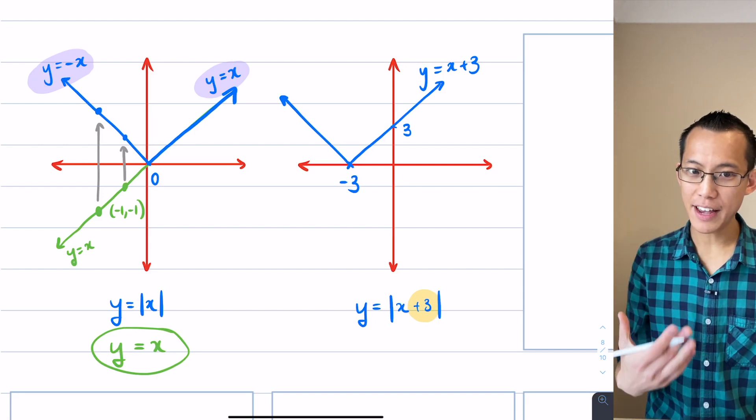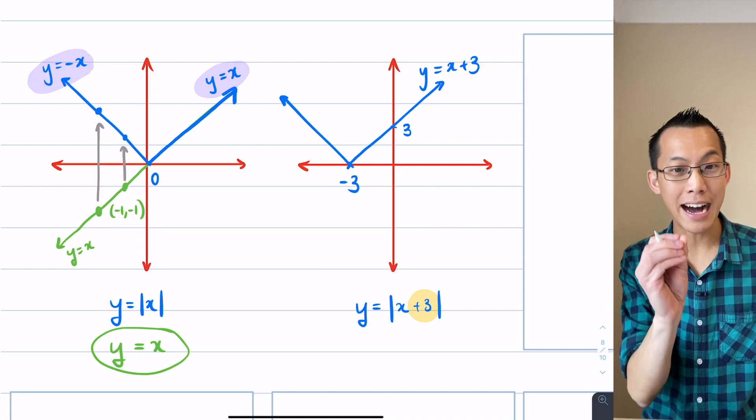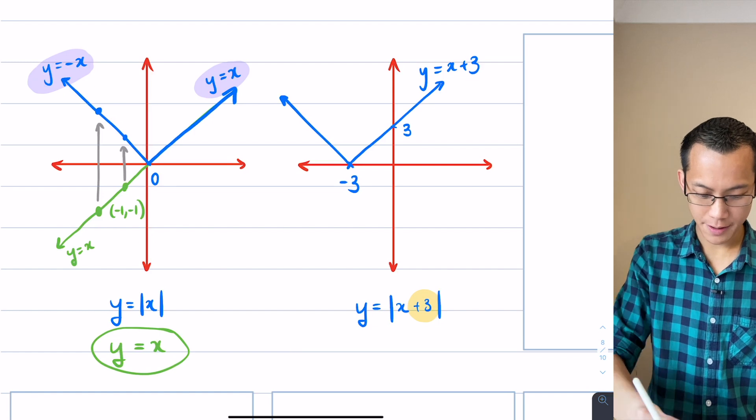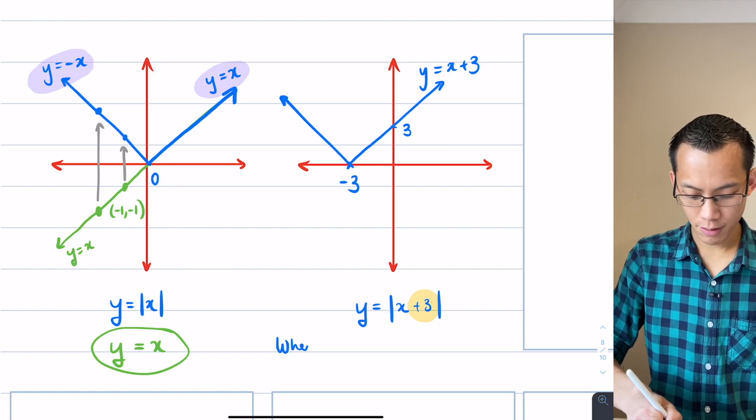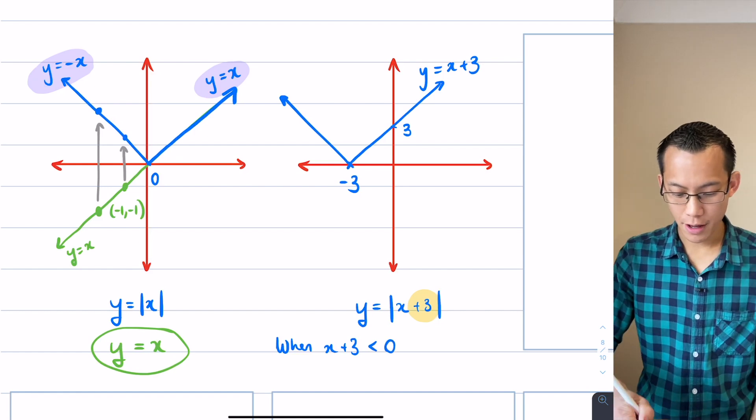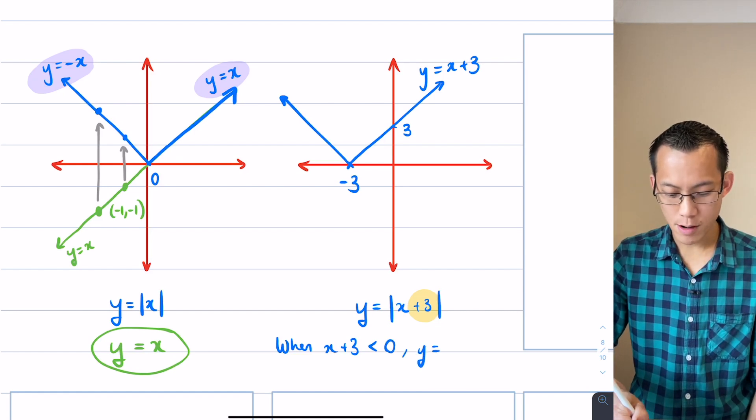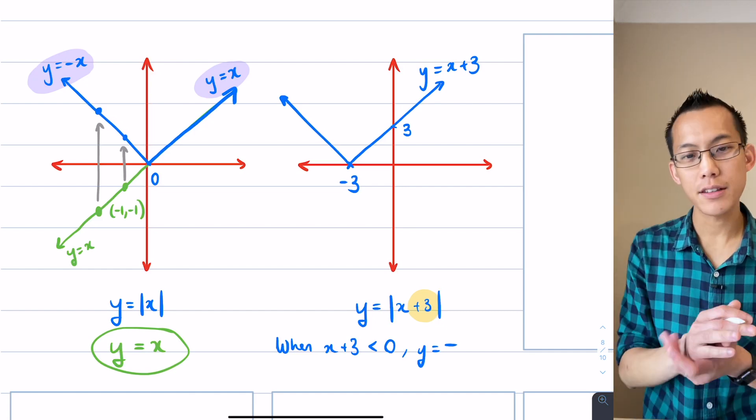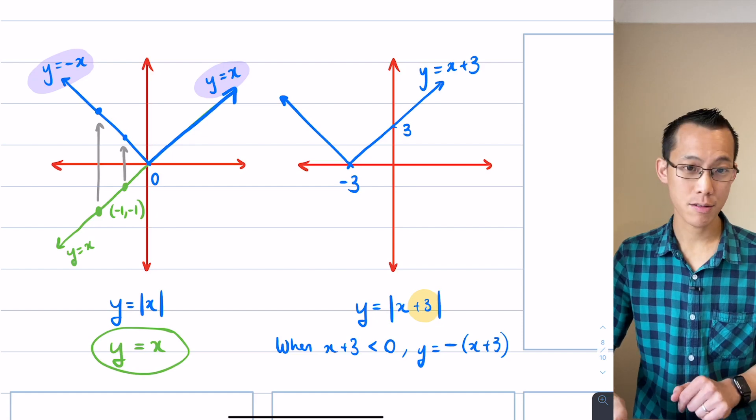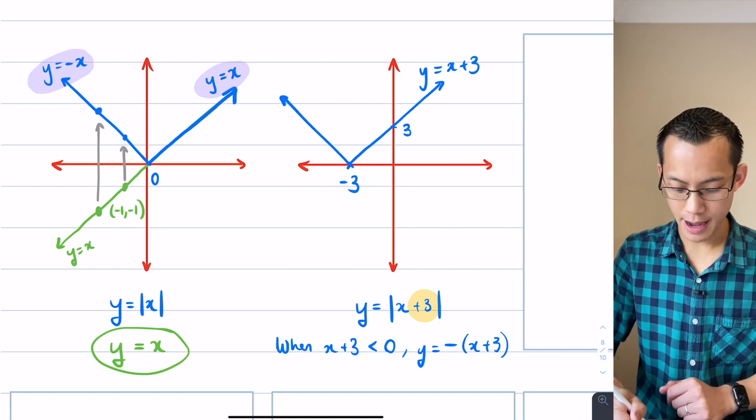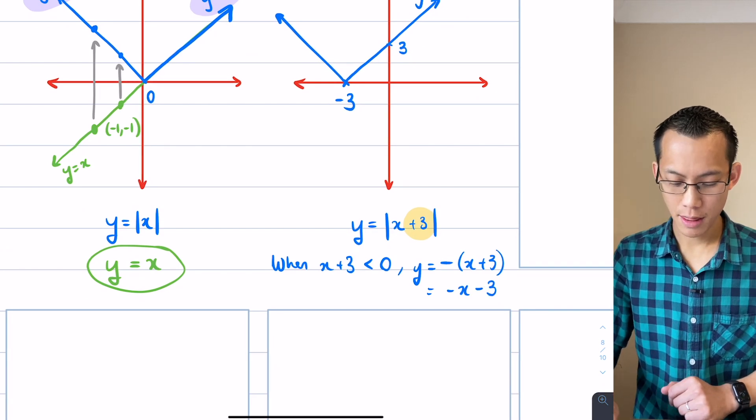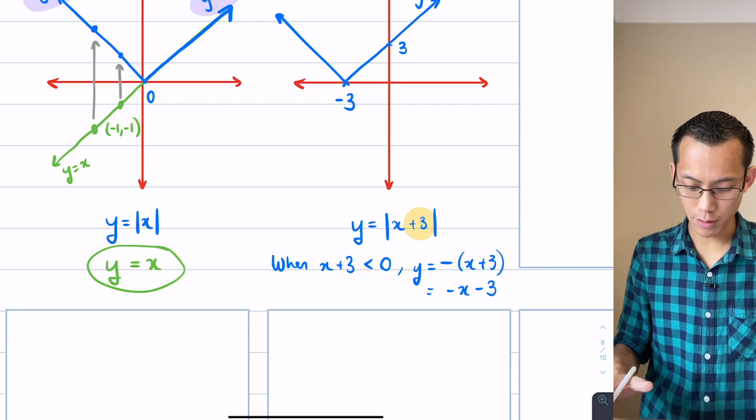Now what about the other part? Well if we go back to our definition of the absolute value, our algebraic one, when you have a negative value there, when x plus 3 is negative, so when x plus 3 is less than 0, the graph y will be equal to minus everything inside the brackets, everything inside the brackets. So that's the x and the plus 3. So if I expand my brackets there, you're going to get minus x minus 3.